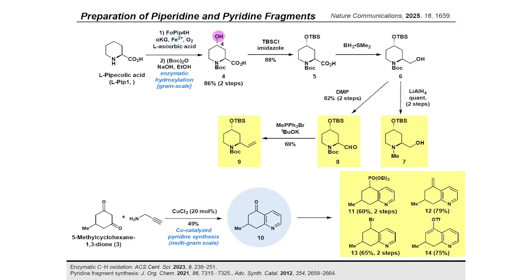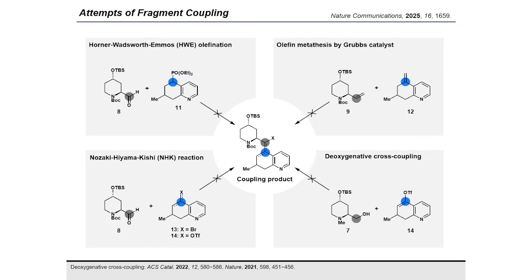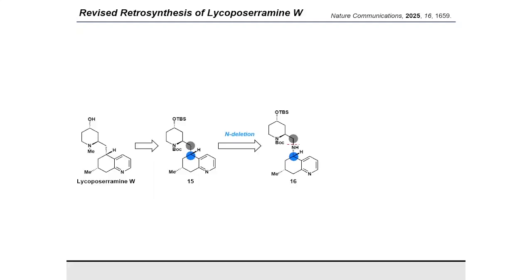Turning our attention to the tetrahydroquinoline fragment, a pyridyl ketone was synthesized from a 1,3-diketone and propargylamine by a copper-catalyzed annulation method in 49% on a multigram scale. This product was used as a divergent point to prepare various tetrahydroquinoline derivatives such as phosphonate, alkene, bromide, and vinyl triflate. With various piperidine and tetrahydroquinoline fragments in hand, we examined late-stage fragment couplings through HWE olefination, olefin metathesis using Grubbs catalyst, NHK reaction, and deoxygenative cross-coupling reactions. However, these reactions resulted in either a complex mixture of products or recovery of starting materials.